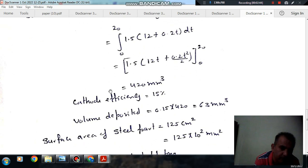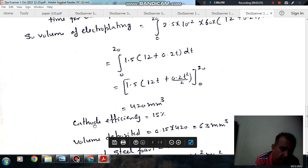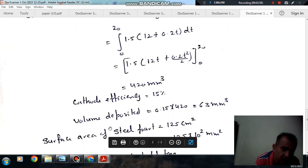As cathode efficiency is 15%, the volume of the coating deposited is 15% of 420. So volume deposited is 63 mm cubed.